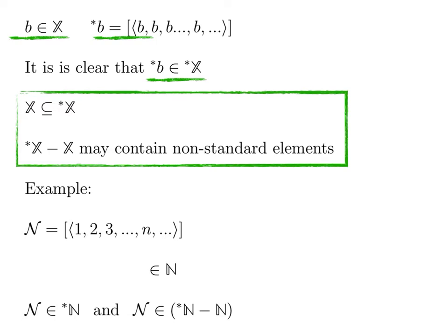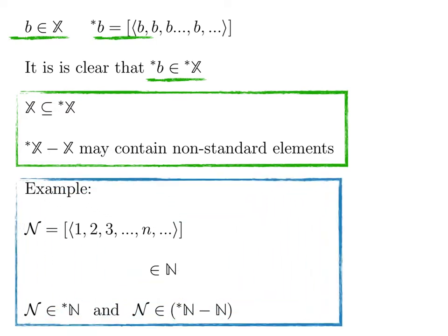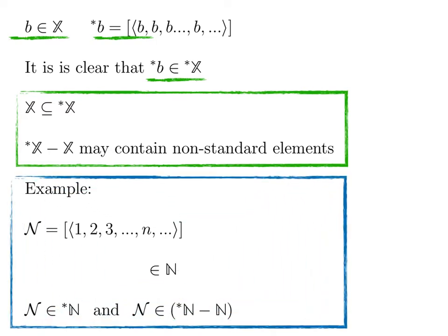Let us take an example. Let curly N be the hyperreal associated to the growing sequence 1, 2, 3, … Each element is an integer, so we say that N belongs to the enlargement of the set of natural integers. In fact, N is also larger than any natural integer, so it is in the set of unlimited hypernatural numbers.